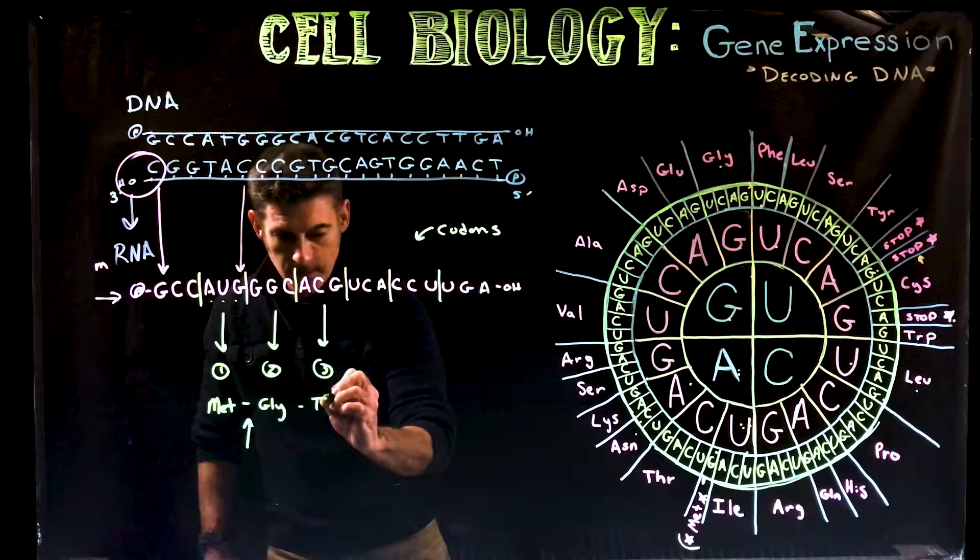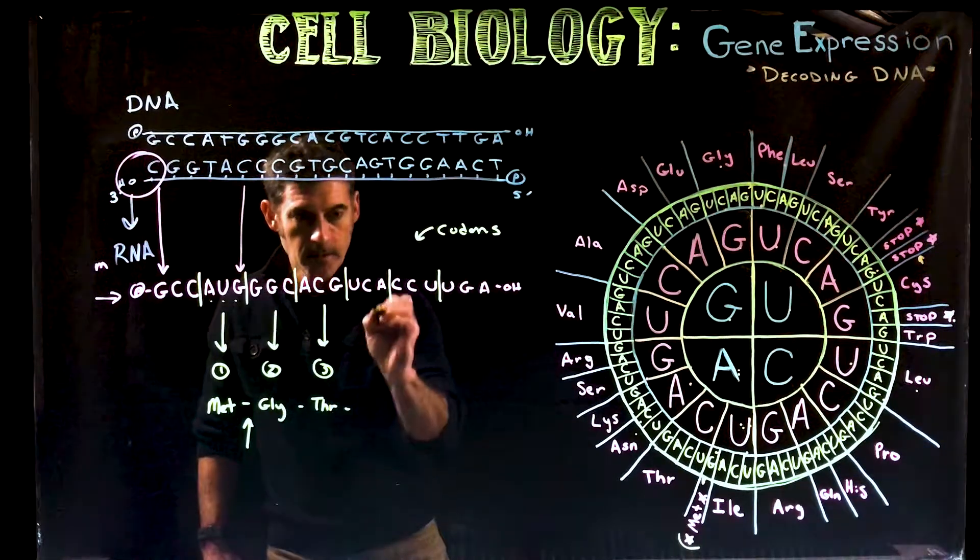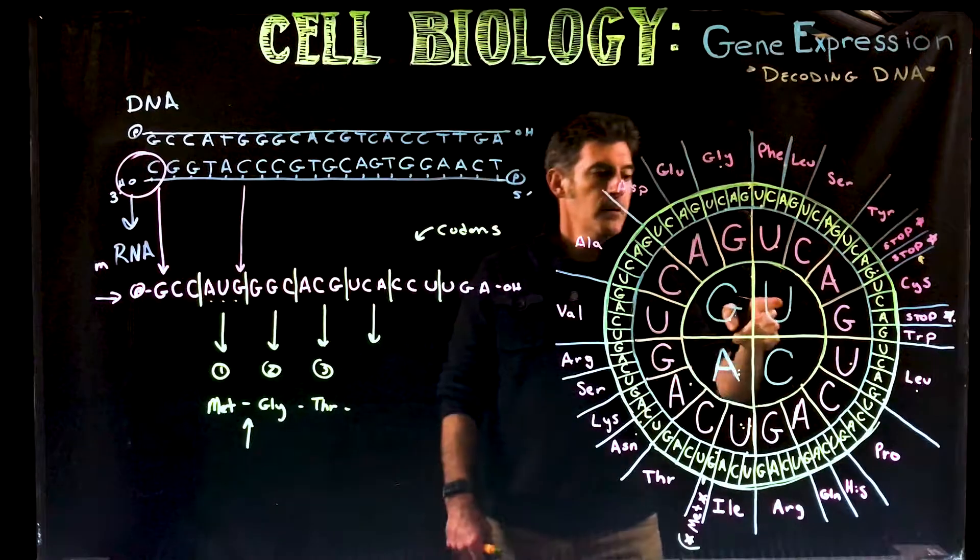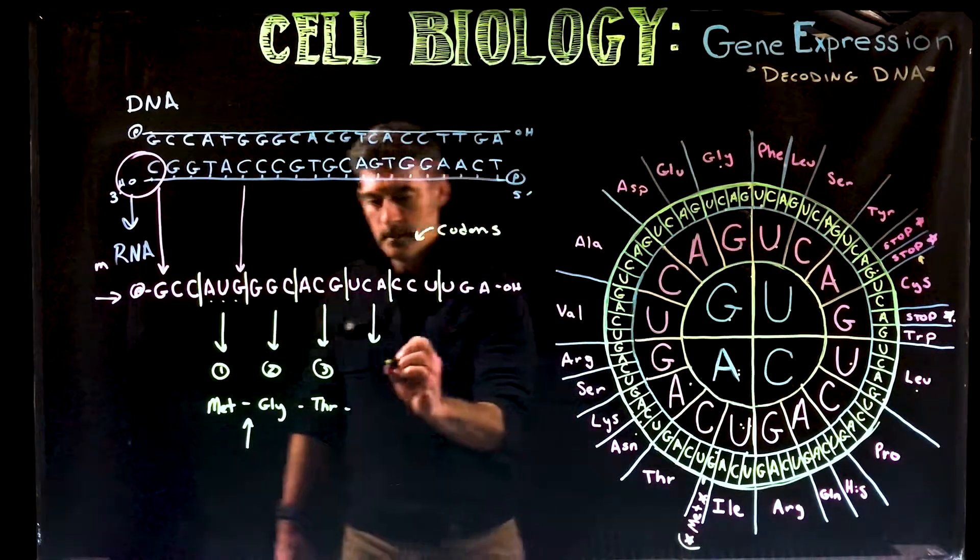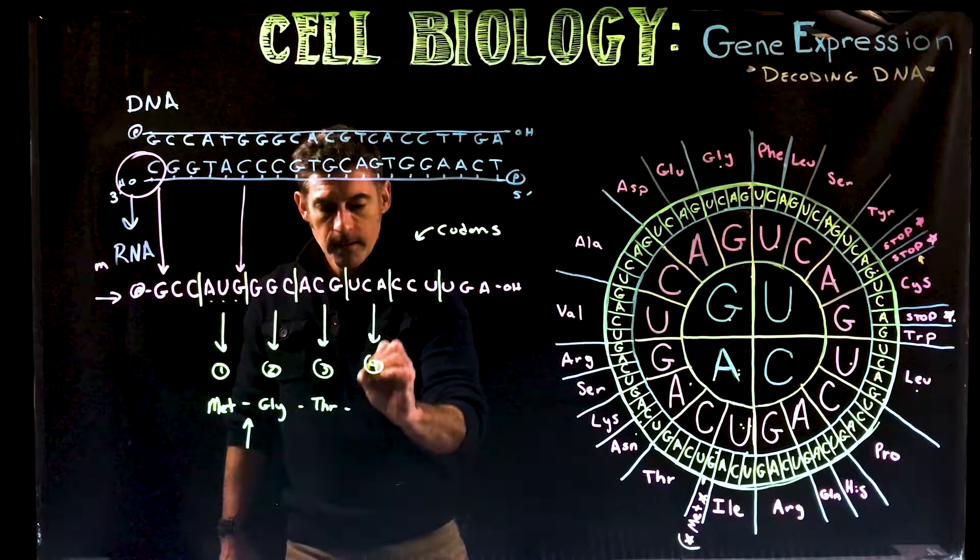Now we have UCA. We go over here: U, C, A is serine. The fourth one is serine.